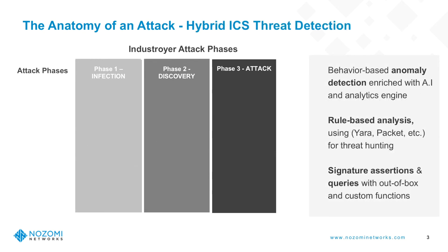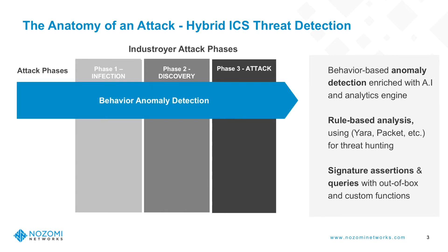So how can you assess if an ICS cybersecurity solution has a hybrid ICS threat detection component, and how can you assess how robust and comprehensive that threat detection suite is? First and foremost, you want to evaluate their ability to conduct anomaly detection. It's not enough to simply say that you have anomaly detection — it needs to be tested in a POC format, because anomaly detection is relevant across all phases of a would-be Indestroyer attack.